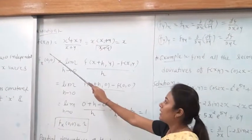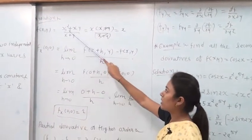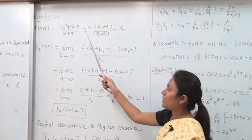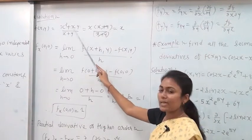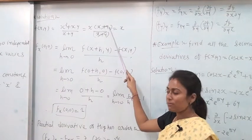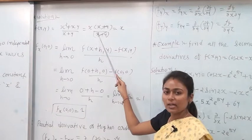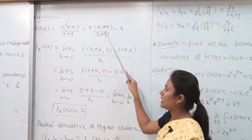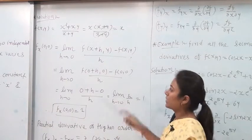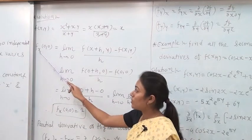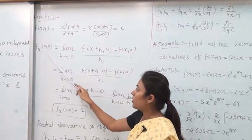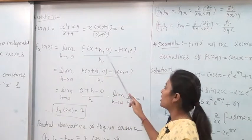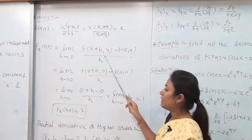The function f(x, y) = (x² + xy) / (x + y). We simplify by taking x common from the numerator: x(x + y) / (x + y), so (x + y) cancels and f(x, y) = x. Using the definition, f_x(x, y) = limit as h → 0 of [f(x+h, y) − f(x, y)] / h.